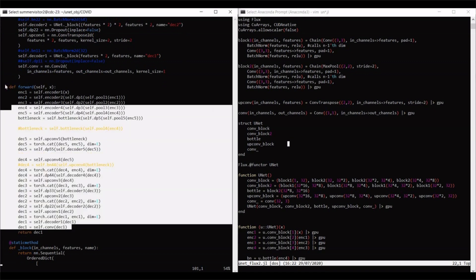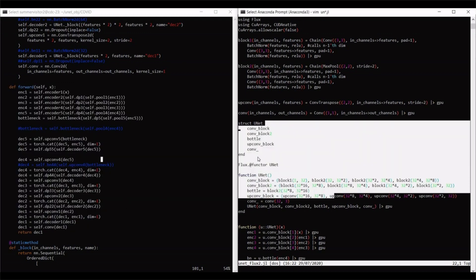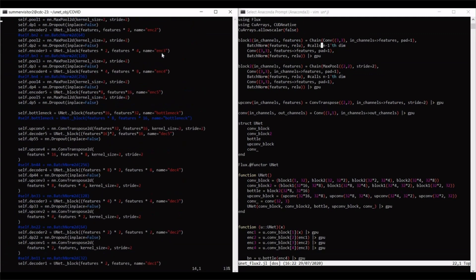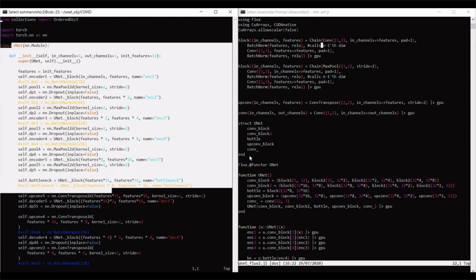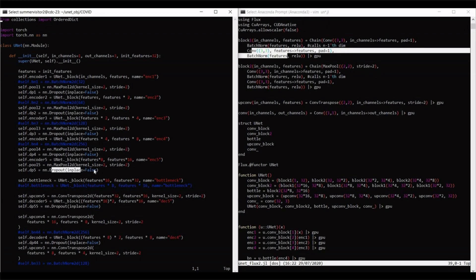It removes the need for a forward function, which is a slightly confusing feature in PyTorch, as its contents tend to overlap a bit with that of the UNET function. Both libraries offer commonly used operations such as 2D convolution, max pooling, dropout, etc., and are comparable in terms of functionality.